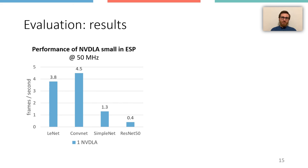First, we ran inference jobs with an SoC with a single NVDLA instance for all four networks. In this graph, we report an average number of frames per second with the system running at 50 MHz on FPGA. The performance depends on the network size, varying between 0.4 frames per second for ResNet50 and 4.5 frames per second for ConvNet.